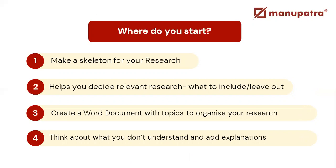Where do you start? First, make a skeleton of your research — essentially write down all the topics and subtopics you're looking at. Second, decide what your relevant research is: what you're going to include and what you're going to leave out. Are you going to focus solely on scholarly articles for a paper, or are you going to focus on judgments from a particular jurisdiction? Making these decisions helps you organize your research better.